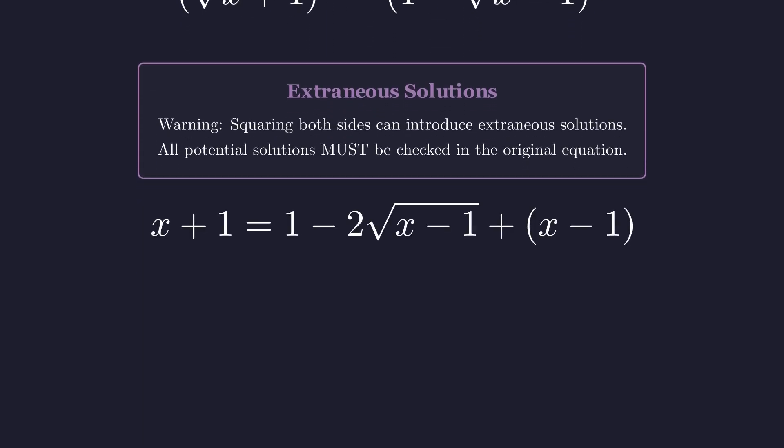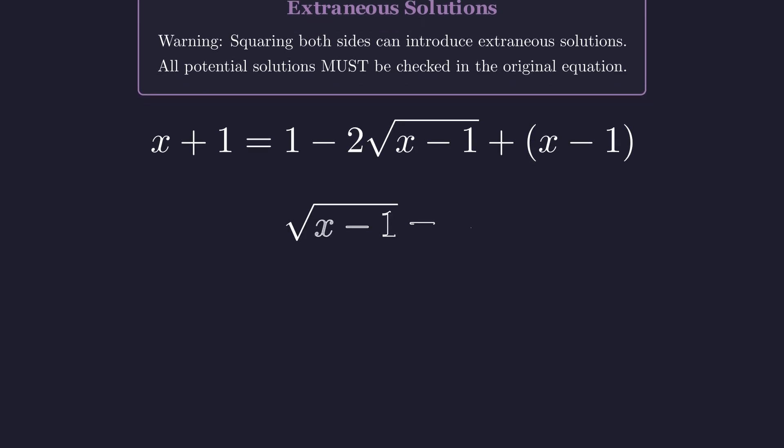On the left, squaring cancels out the square root. On the right, we need to expand the binomial: 1 minus square root of x minus 1, all squared. After some algebra, we get square root of x minus 1 equals negative one half. But wait — this is impossible! A principal square root is always non-negative. Still, let's see what happens if we ignore this red flag and keep going. This is a perfect example of how extraneous solutions sneak in.